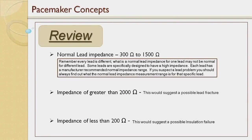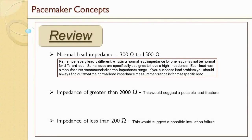To review: a normal lead impedance is typically between 300 ohms and 1500 ohms. Remember, every lead is different — what is normal for one lead may not be normal for another. Some leads are specifically designed to have high impedance. Each lead has a manufactured recommended normal impedance range. If you suspect a lead problem, find out what the normal range is for that specific lead. An impedance greater than 2000 ohms suggests a possible lead fracture. An impedance less than 200 ohms suggests a possible insulation failure.